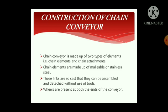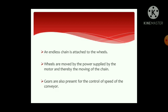Construction of Chain Conveyor. Chain Conveyor is made up of two types of elements: chain elements and chain attachments. Chain elements are made up of malleable or stainless steel. These links are cast so that they can be assembled and detached without the use of tools. Wheels are present at both ends of the conveyor, and an endless chain is attached to the wheels. Wheels are moved by power supplied by the motor, thereby moving the chain. Gears are also present for the control of speed of the conveyor.